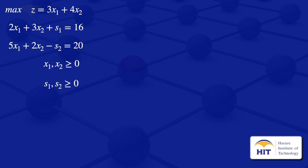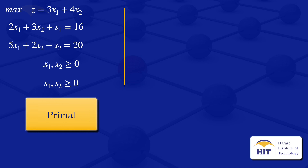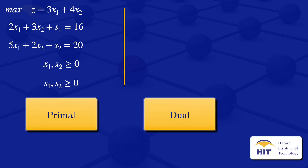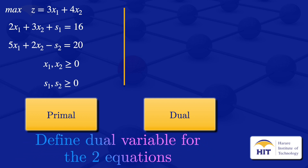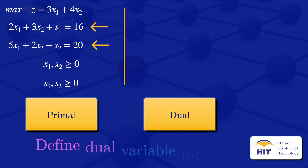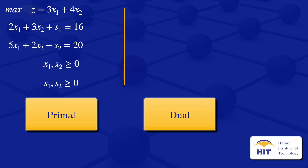What we have now is our primal problem, and we want to find the dual. To do so, we define a dual variable for each of the two equations — where we added the slack and surplus variables. I'll call the first dual variable y1 for the first equation and y2 for the second. Our primal problem is a maximization problem, and therefore our dual will be a minimization.